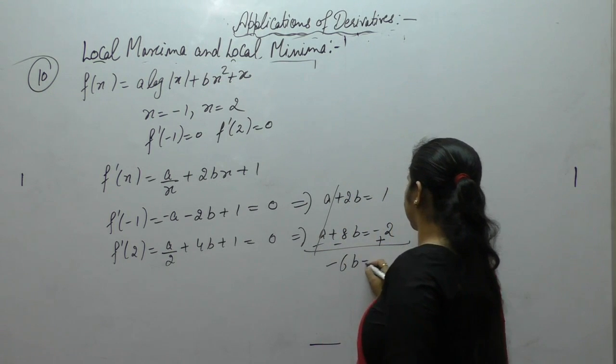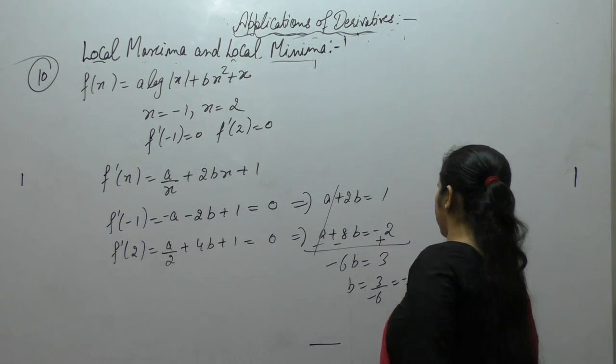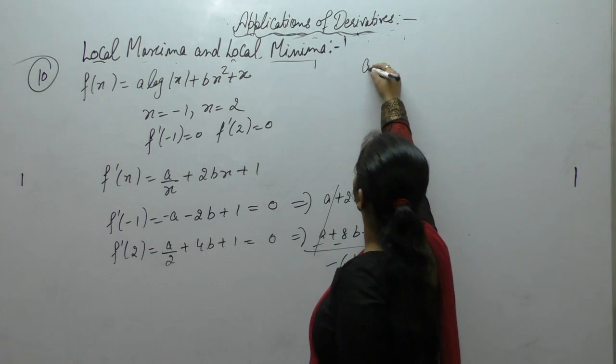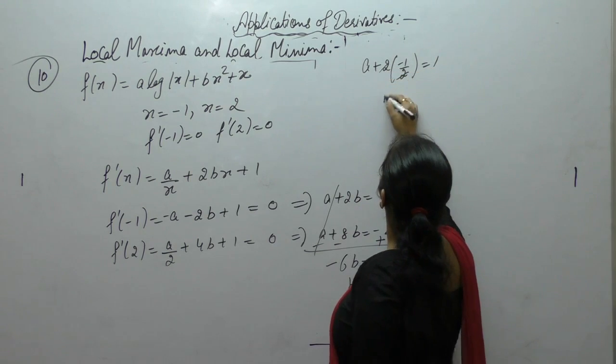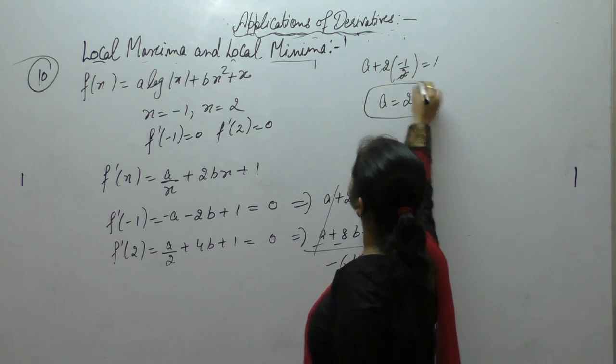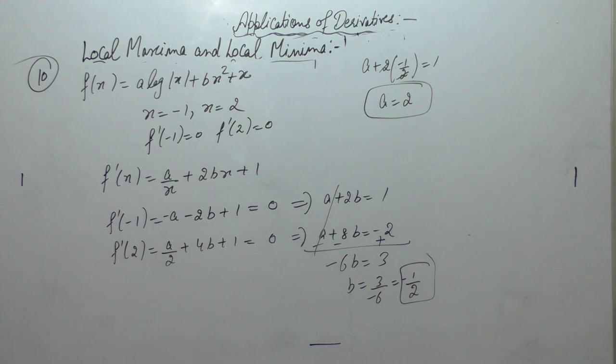Minus 6b. b is 3 upon minus 6, minus 1 by 2. Put the value of b as minus 1 by 2. 1 plus 1, 2. So for b is minus 1 by 2, a is equal to 2.